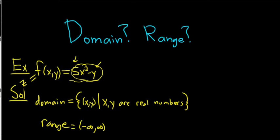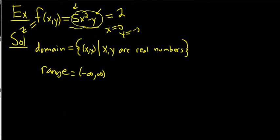For example, if you wanted to produce 2, you could make x = 0 and y = -2, and then this would equal 2. So you can get any number using any x and y. That's the first example — kind of an easy one. Let's jump to a much more interesting one.